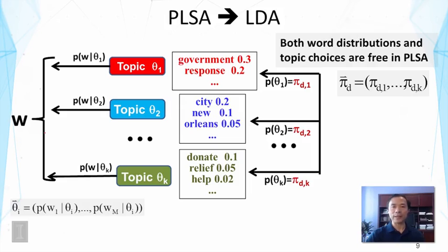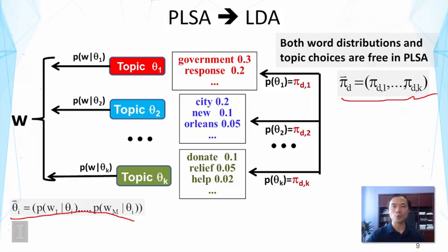This is the picture of LDA — I've removed the background model for simplicity. In this model, all parameters are free to change and we do not impose any prior. The word distributions are represented as theta-i vectors — one vector for each topic. The other set of parameters are pi, also represented as a vector, with one vector for each document.